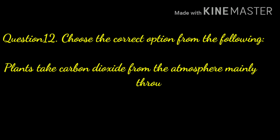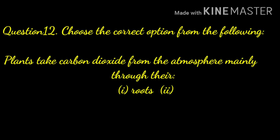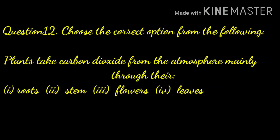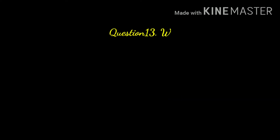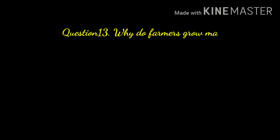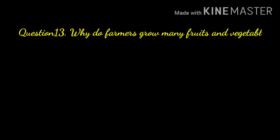Question number twelve: choose the correct option — plants take carbon dioxide from the atmosphere mainly through their roots, stems, flowers, or leaves? The answer will be leaves.